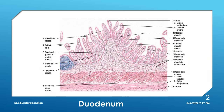So the first slide we are seeing here is the duodenum. For the basic four layers of GIT, that is your mucosa, submucosa, muscularis externa, and serosa — all four layers are present. So it is a slide of the GIT.